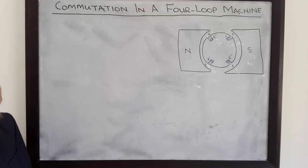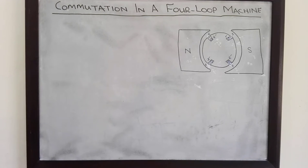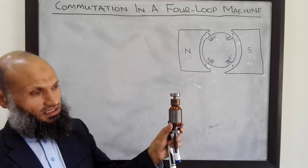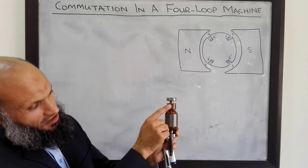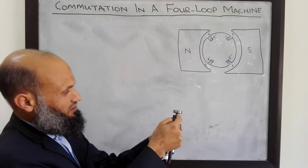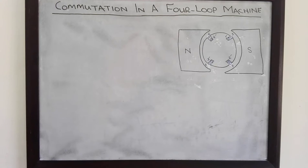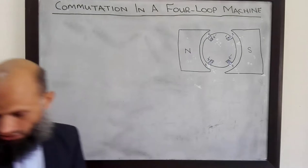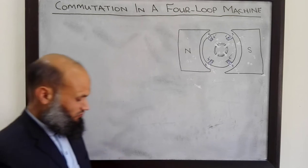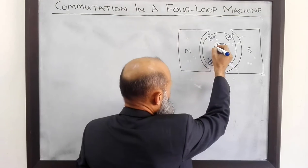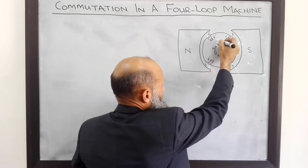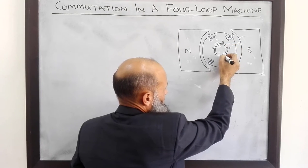The number of commutator segments is the same as the number of coils in the DC machine. Whenever you see commutators in a machine, you should quickly guess that there is a DC machine. Here are four commutator segments — let's call them segment A, segment B, segment C, and segment D.